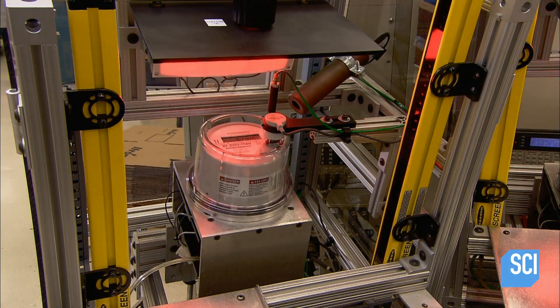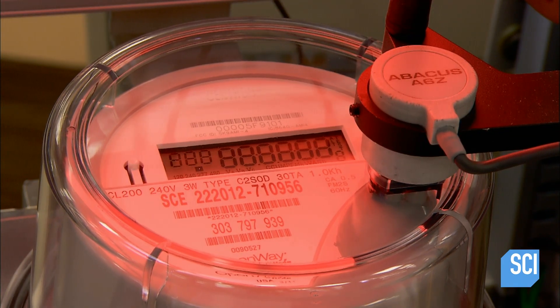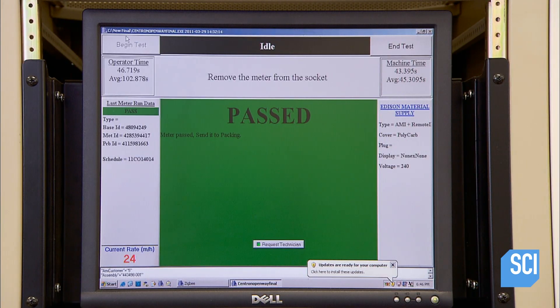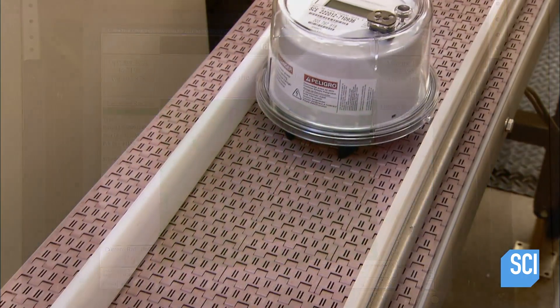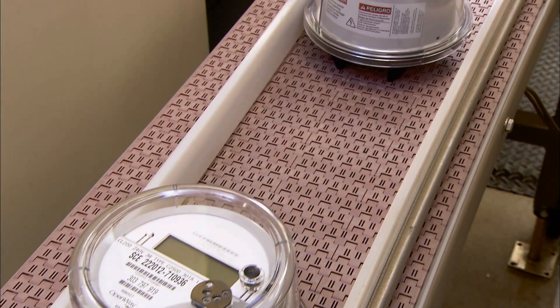An automated station verifies the display using a vision system. It checks that the remote disconnect switch operates properly, that the meter measures electricity accurately, and successfully transmits and receives messages.